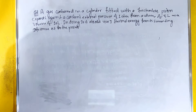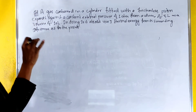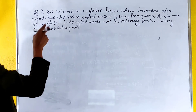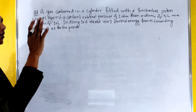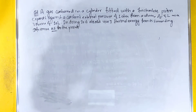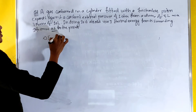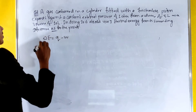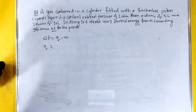Next question: A gas contained in a cylinder fitted with a frictionless piston expands against a constant external pressure of 1 ATM from a volume of 5 liters to a volume of 10 liters. In doing so, it absorbs 400 J of thermal energy from its surroundings. Determine delta E. From the first law of thermodynamics, delta E equals q minus W.